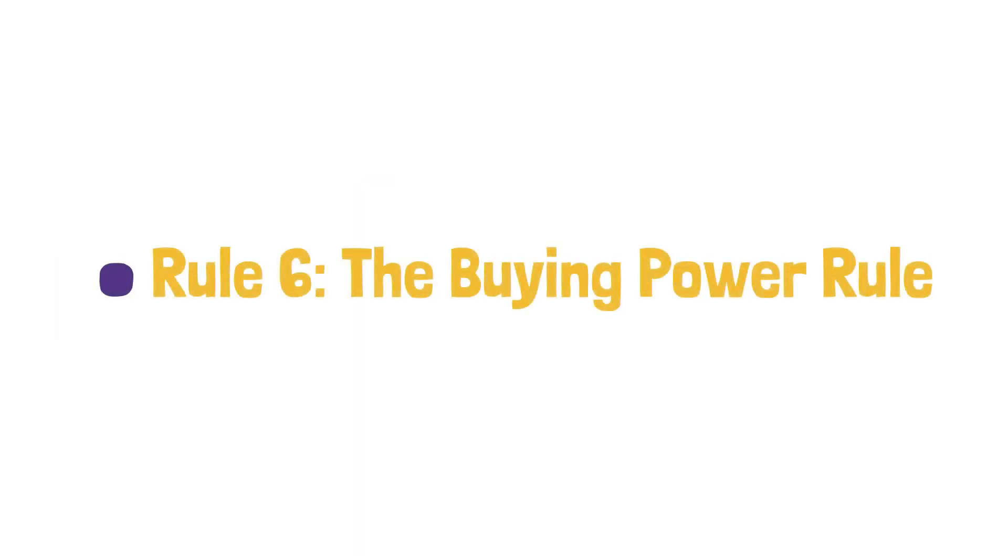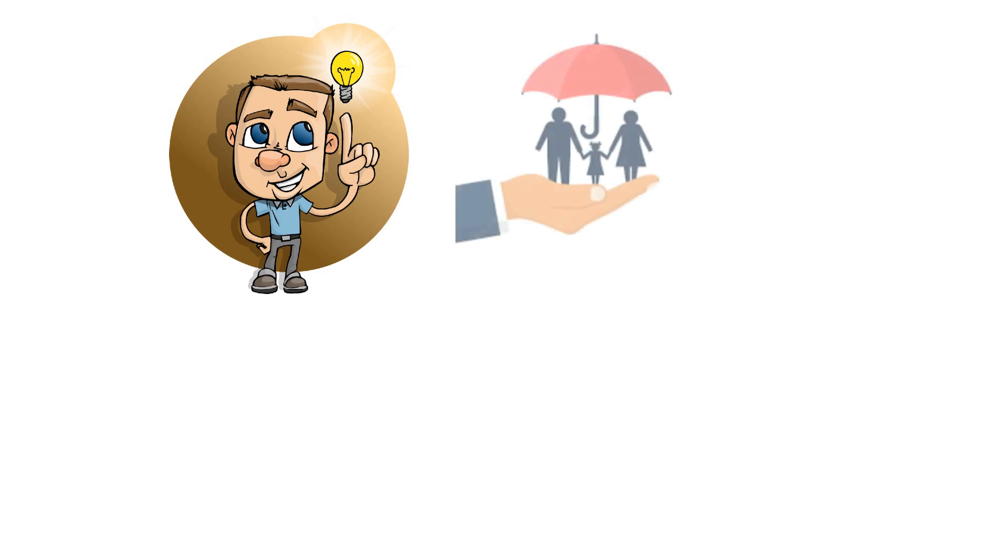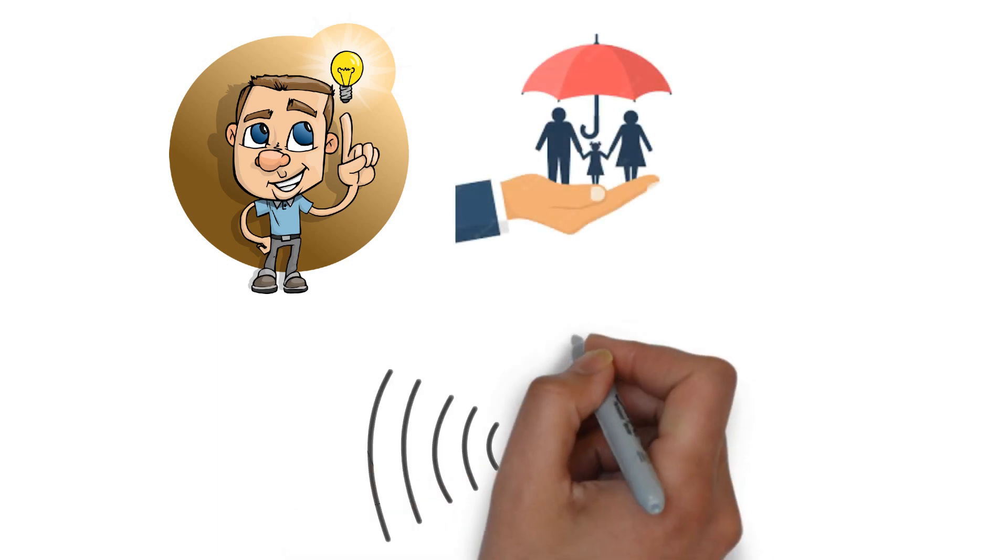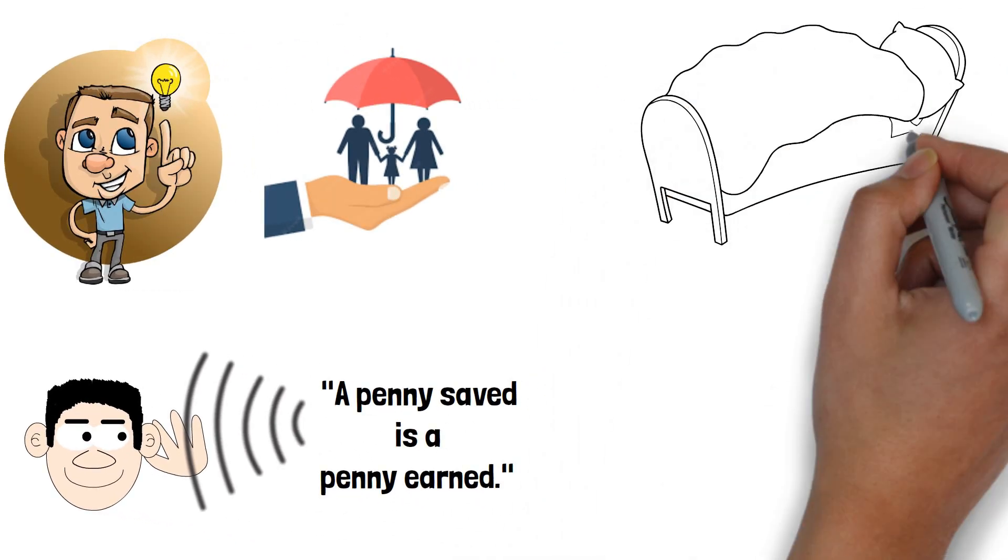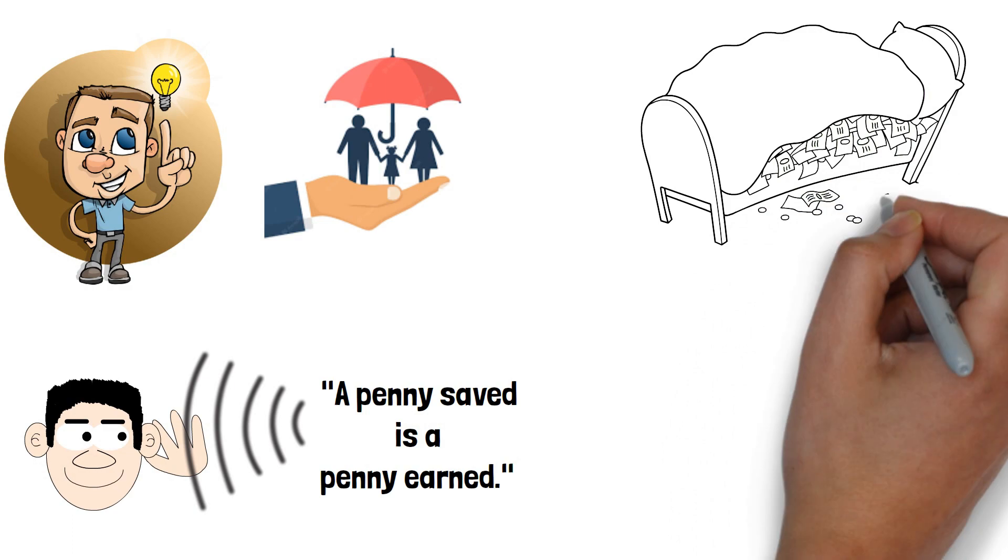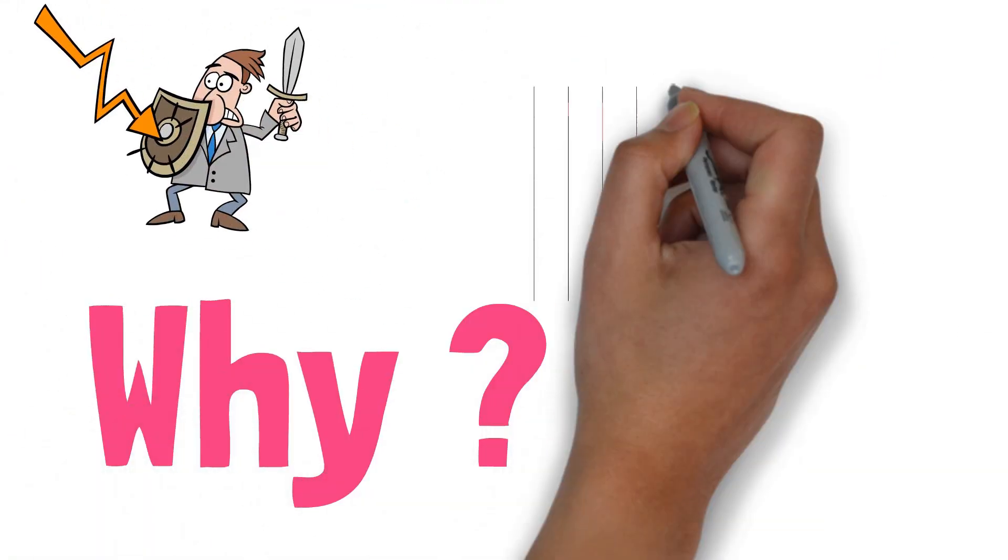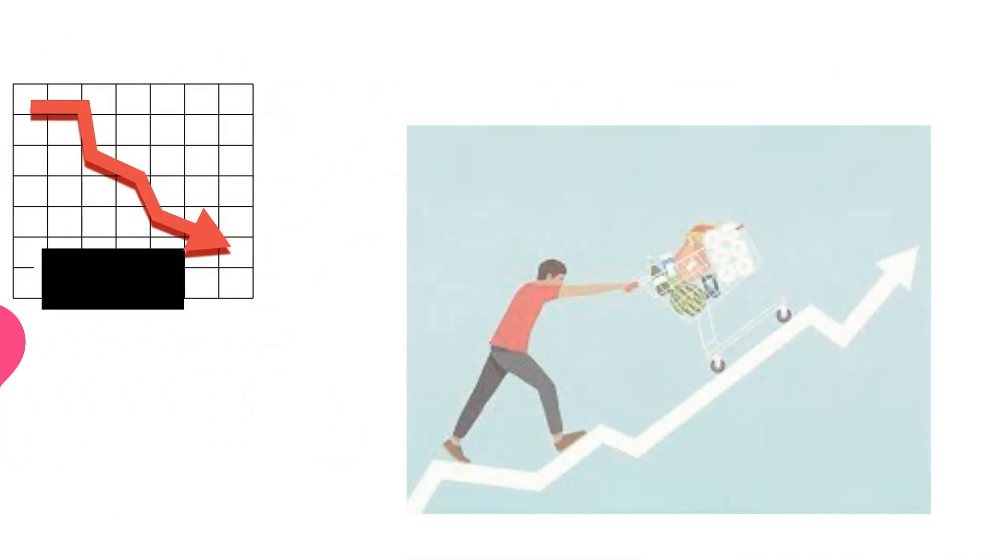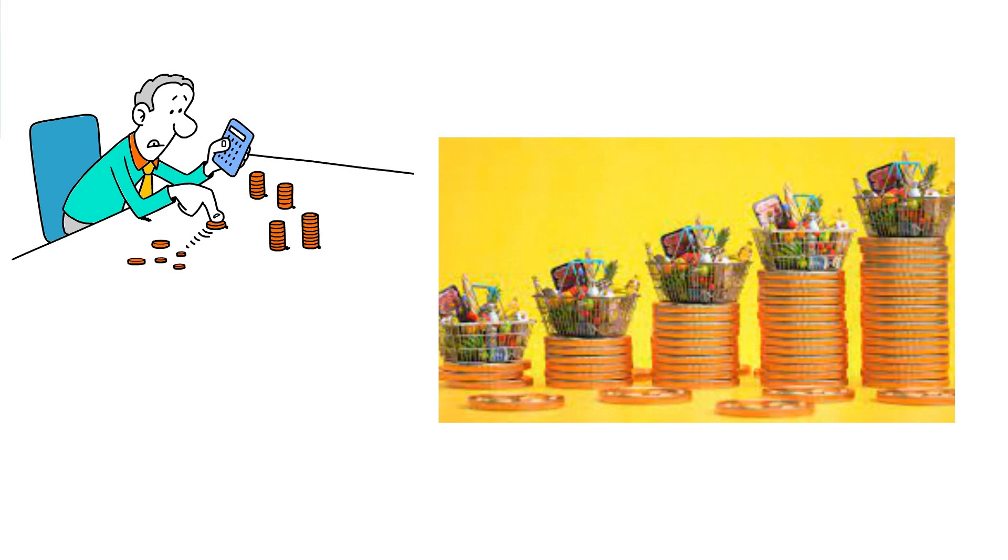Rule number six, the buying power rule. If there's one thing the wealthy know that others often overlook is the importance of protecting their buying power. You may have heard the saying, a penny saved is a penny earned. However, more than saving money in a bank account or under the mattress is needed to protect your wealth. Why? Well, the answer is inflation. Inflation is the gradual increase in the cost of goods and services over time, which can erode your savings value.